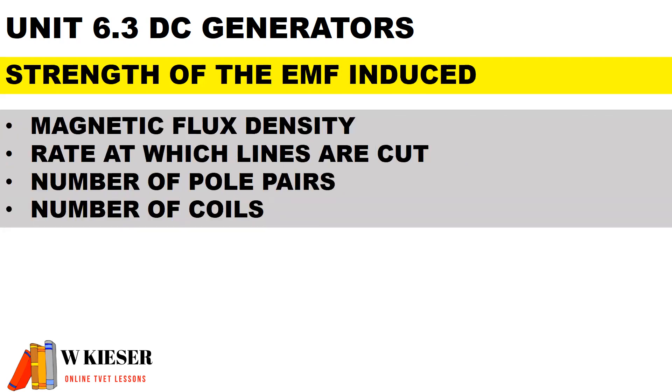To influence the size of the induced EMF, we can increase the strength of the magnetic flux density, increase the rate at which the lines are cut, increase the number of pole pairs, or increase the number of coils inside the armature assembly.